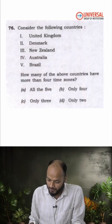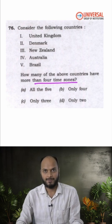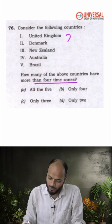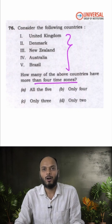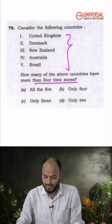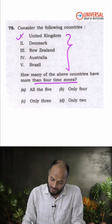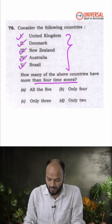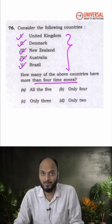It is about countries having more than four time zones. So they are asking out of these five countries, how many of them have more than four time zones. So you see, countries like UK, Denmark, New Zealand, Australia, Brazil, they have multiple time zones.